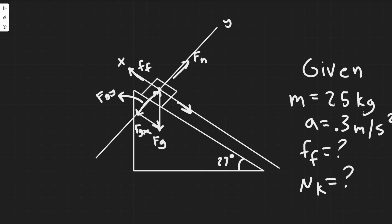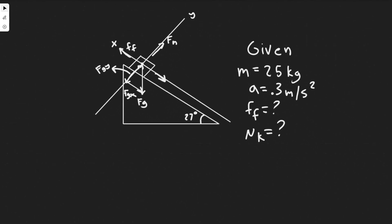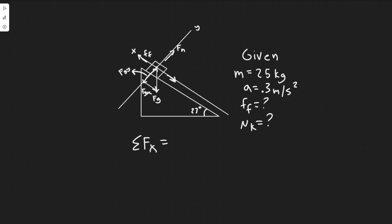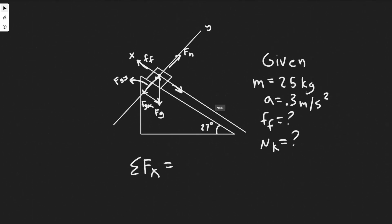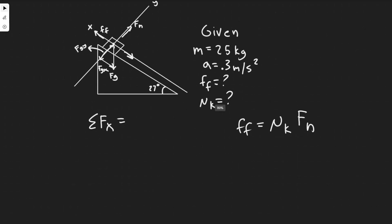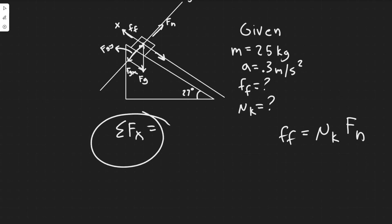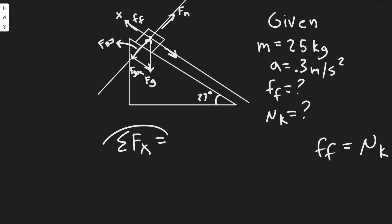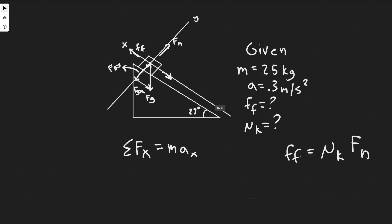To solve this problem, we sum the forces. Starting with the x-direction: the sum of forces in x equals ma_x, using Newton's second law F = ma. The acceleration in the x-direction is given as 0.3 meters per second squared.